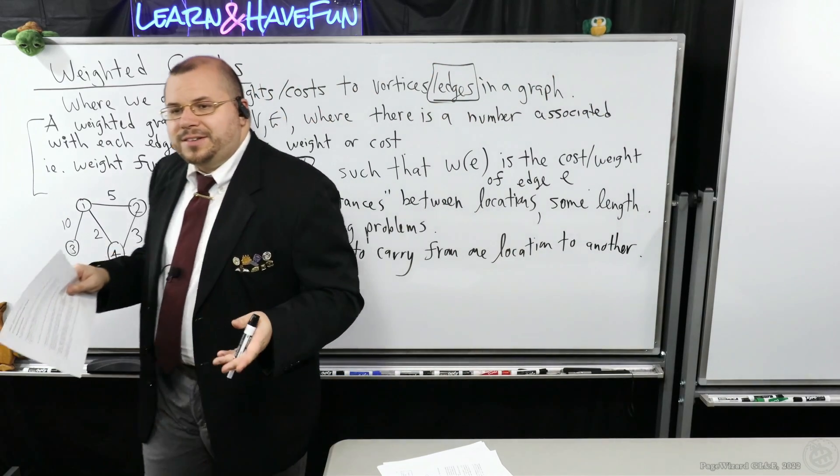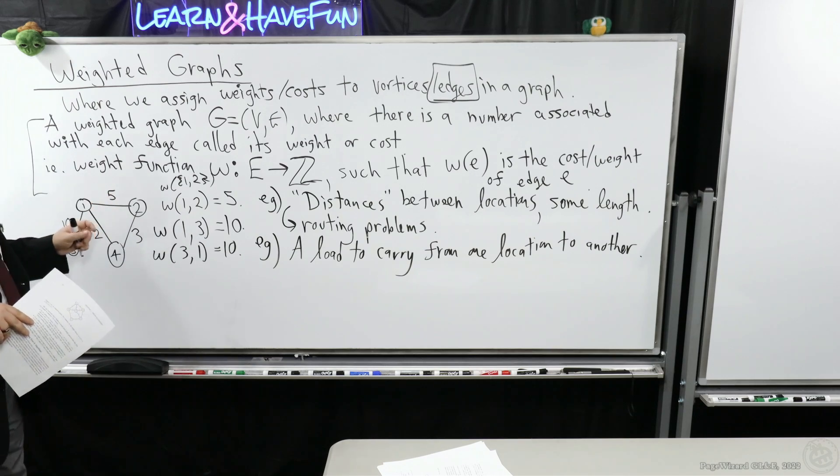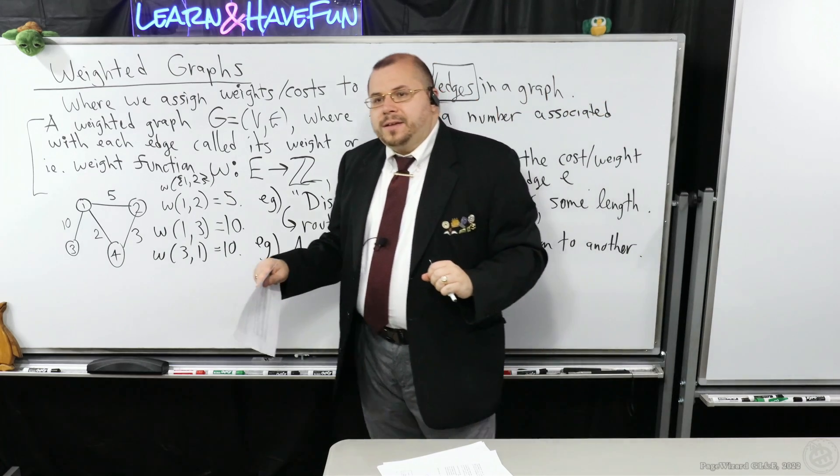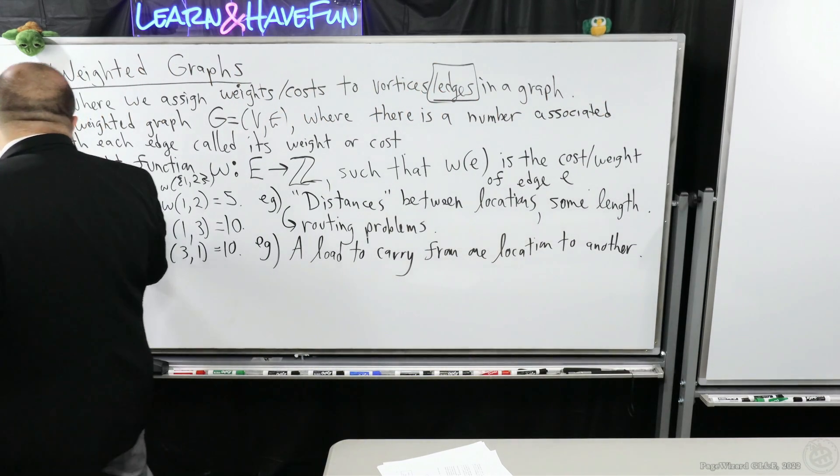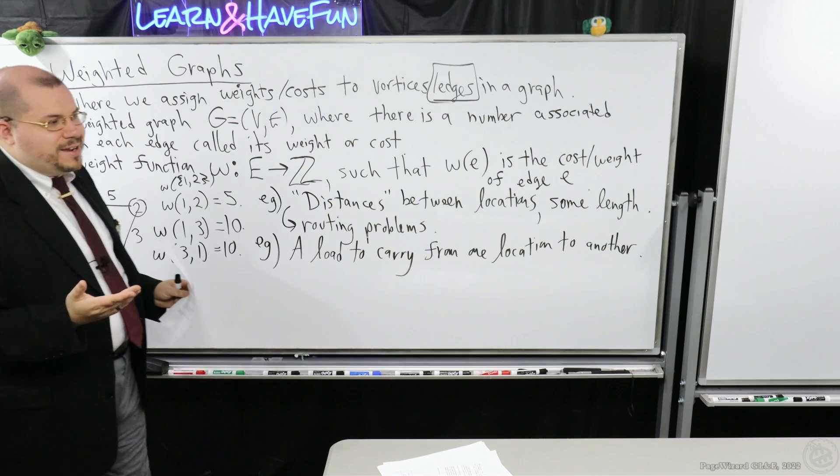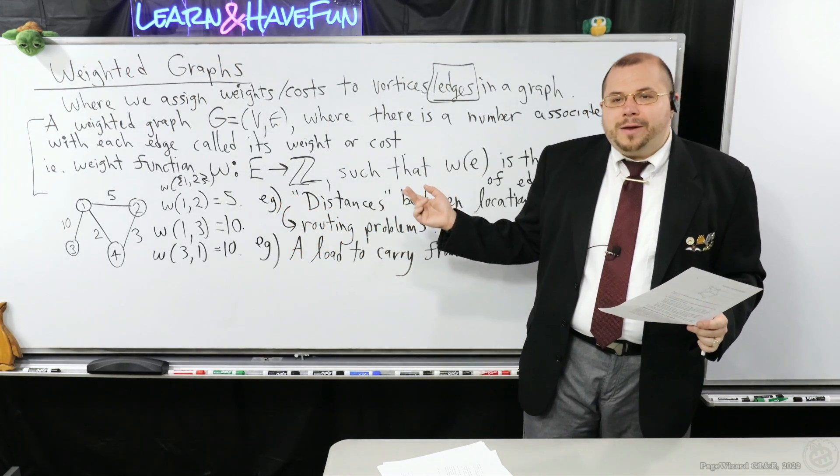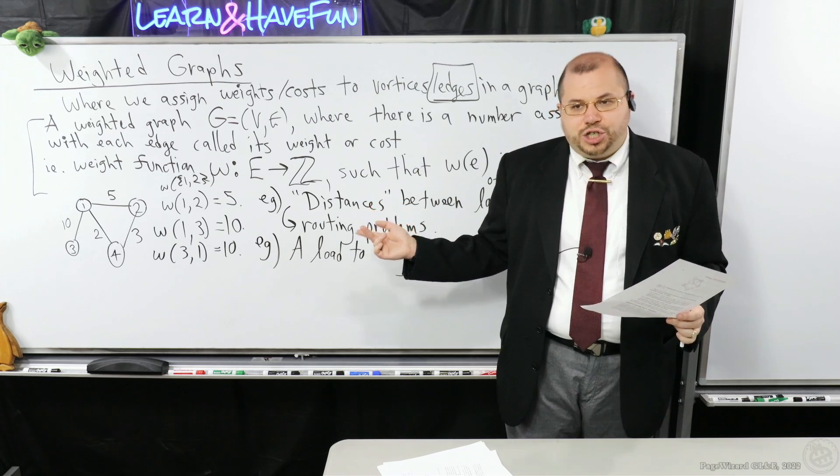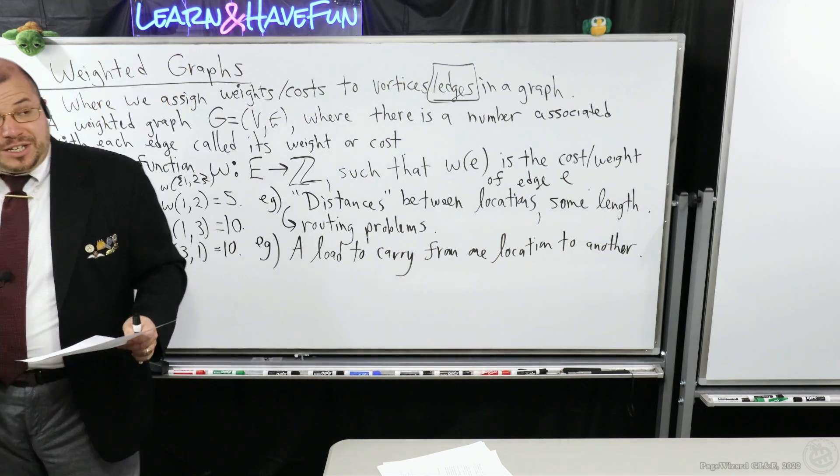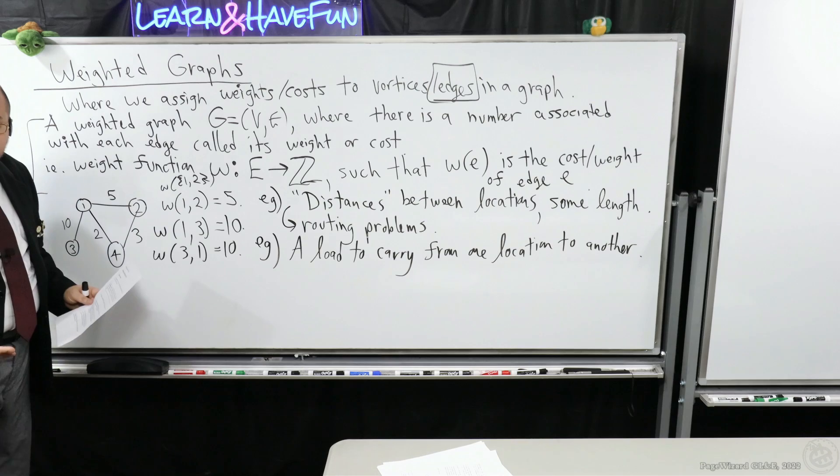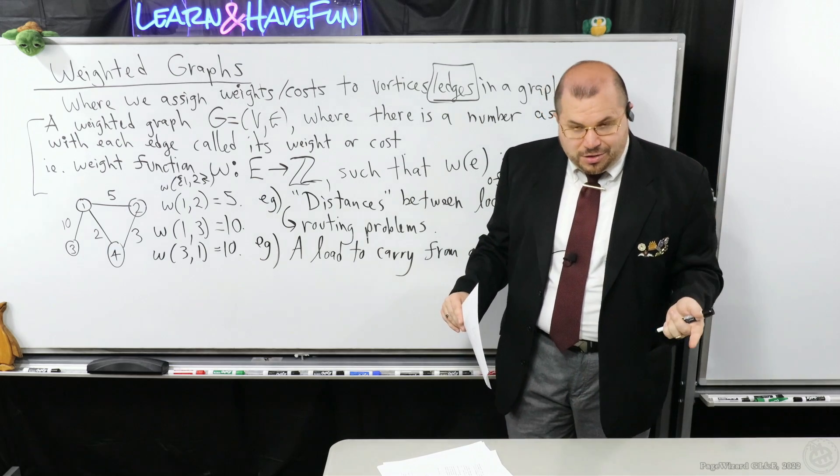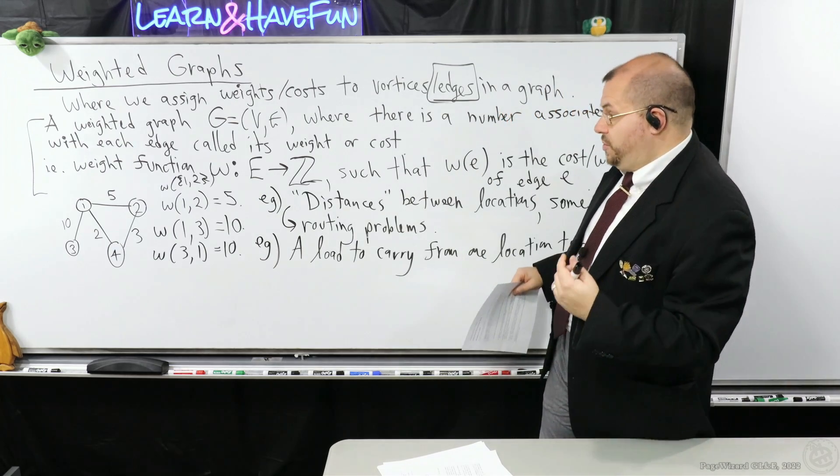Another one is it might be a load to carry from one location to another. You can imagine each one of these edge weights being a cost associated with taking some resource and allocating it to one of its endpoints. For example, you could imagine this, say, these two being two depots. Say, one and two here being a depot, and say there's some commodity that has to be allocated that represents that edge right there between one and two. And you have to decide which of the two should the commodity be transported to.